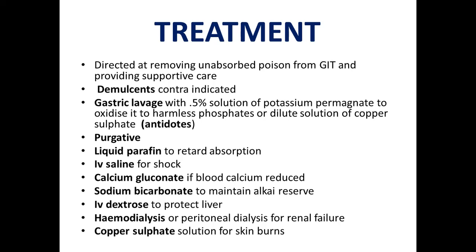IV intravenous saline is given to treat shock. If blood calcium is reduced, calcium gluconate is given. Sodium bicarbonate can be given to maintain alkali reserve. Dextrose is given intravenously to protect the liver. Hemodialysis or peritoneal dialysis is done in case of renal failure. For skin burns, copper sulphate solution can be applied topically. These were the salient points of treatment of acute phosphorus poisoning; we will take up the rest of acute poisoning and chronic phosphorus poisoning in the next lecture.